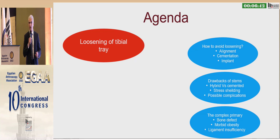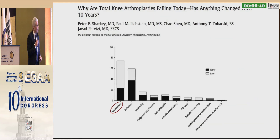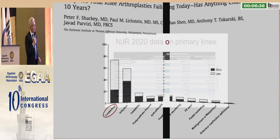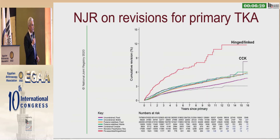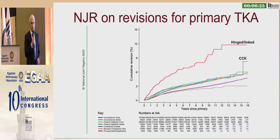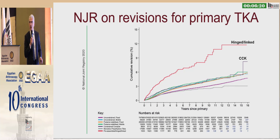We know that loosening is the first cause of revision. Looking at the NGR data from 2020 on aseptic loosening, I would like you to look at this graph as well: the more constrained the implant used in a primary knee, the higher the incidence of loosening and revision in postoperative survival.